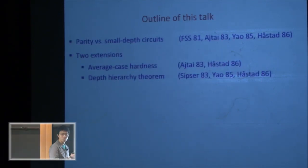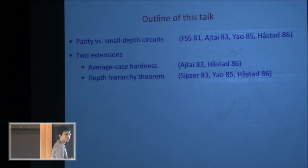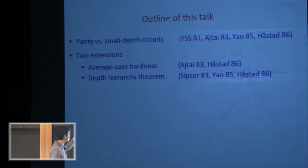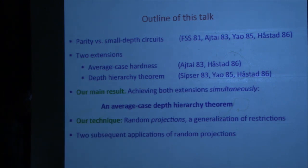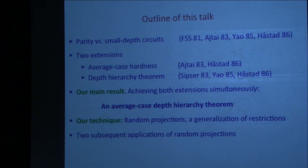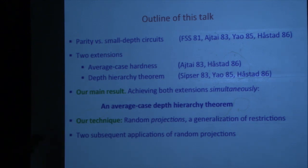The outline of this talk will take some time to get to our main result — there's quite a bit of context. I want to quickly recall the signature result on parity versus small depth circuits: a long line of work ending with Hastad's optimal lower bounds for parity. There are two extensions: the first is average case hardness, and the second, slightly less well known, is a depth hierarchy theorem for Boolean circuits. Our main result achieves both extensions simultaneously — we prove an average case depth hierarchy theorem. Our technique is that of random projections, a generalization of random restrictions, which help overcome difficulties in establishing this.